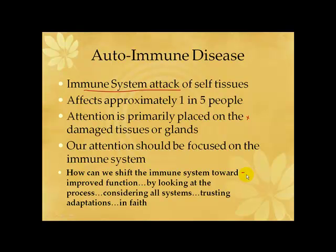For instance, the adrenal hormones — if we get stressed out and the stress becomes chronic, that chronic stress becomes a hormonal change that has an impact on your immune system. We need to look at all those systems and trust the adaptations.